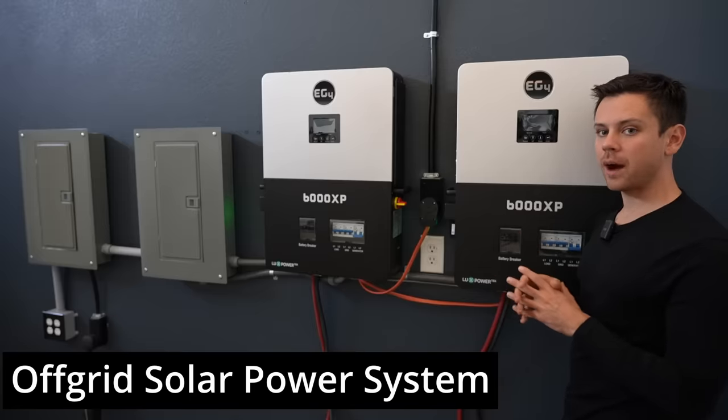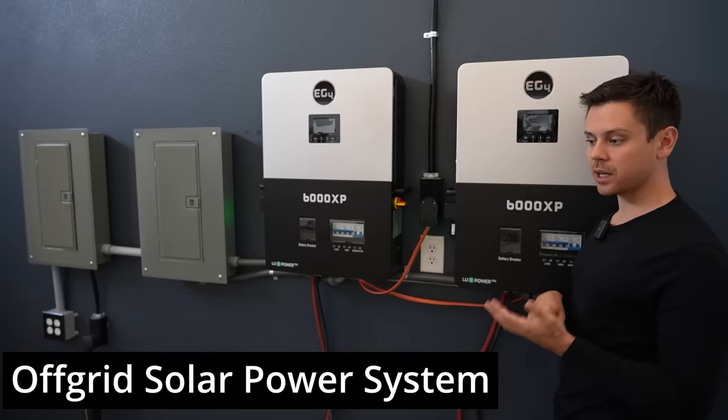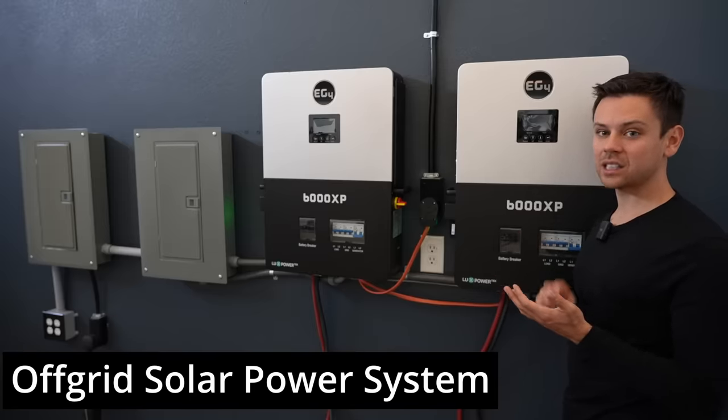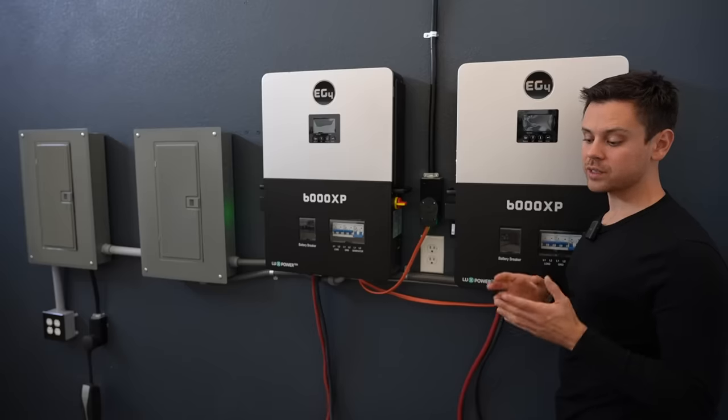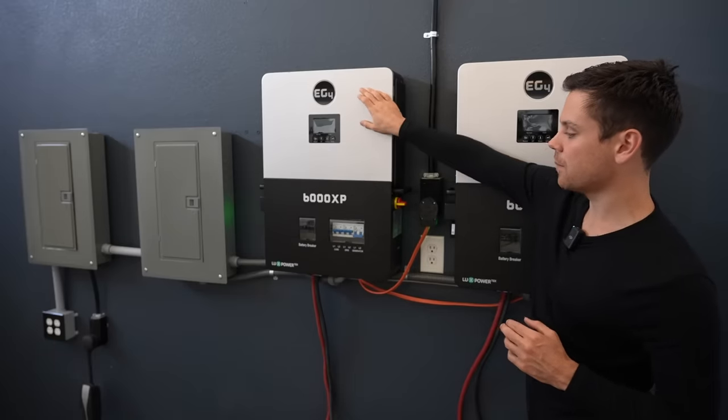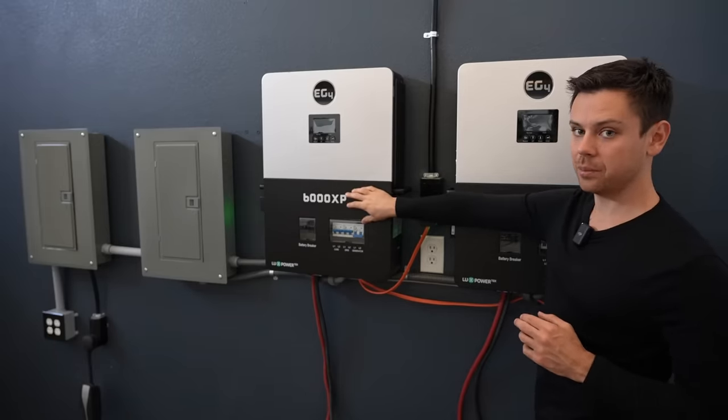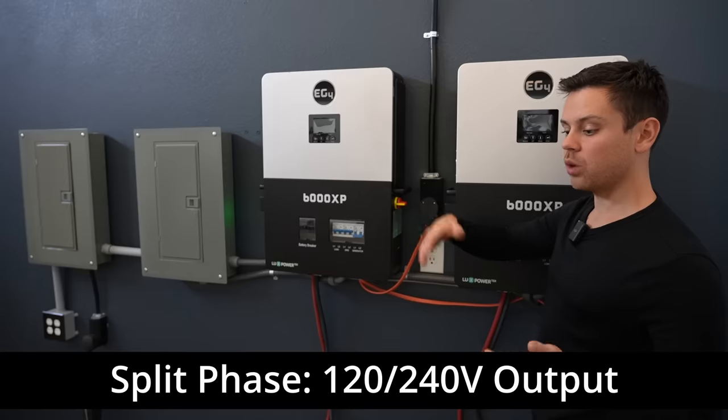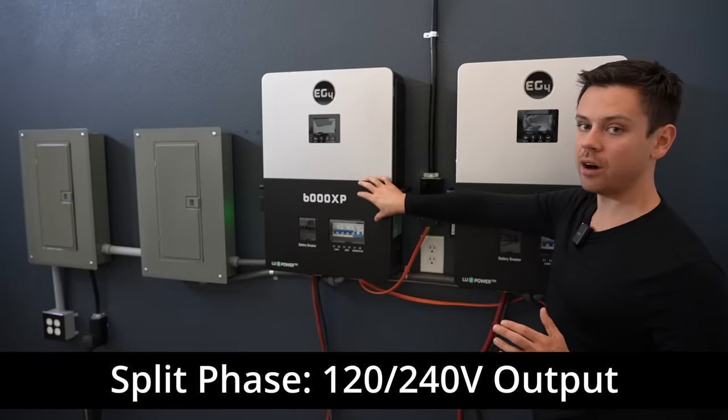This is my new off-grid solar power system that's easy to build for beginners and easy to expand for quite a few reasons. First off, we have the 6000 XP by EG4 and it has a split phase output, which means it does 120-240 volts on its own.